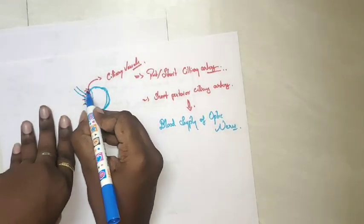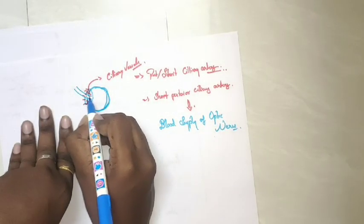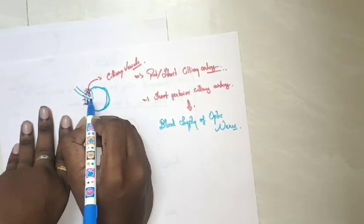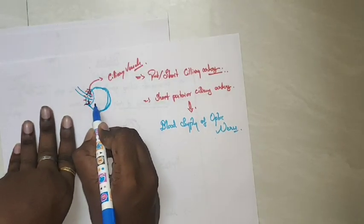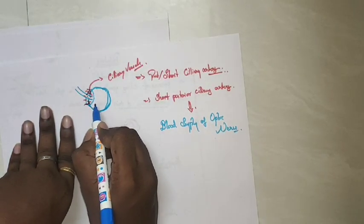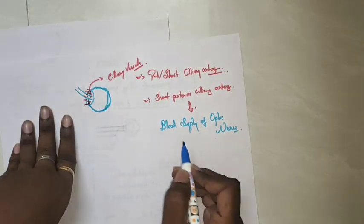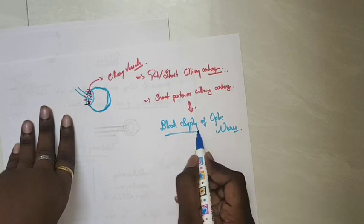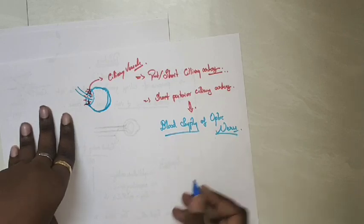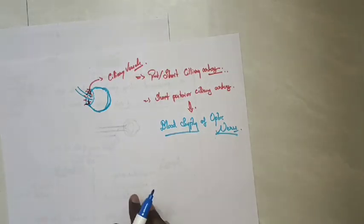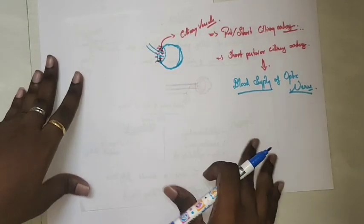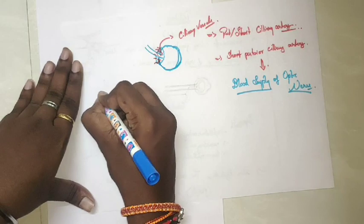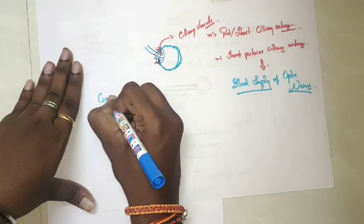Specifically, these vessels are the short posterior ciliary arteries, and they are responsible for the blood supply of the optic nerve. Now we'll move on to the clinical anatomy of the optic nerve.